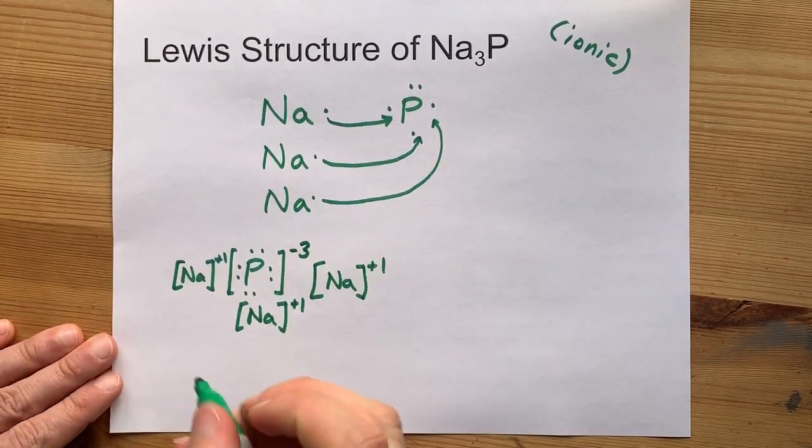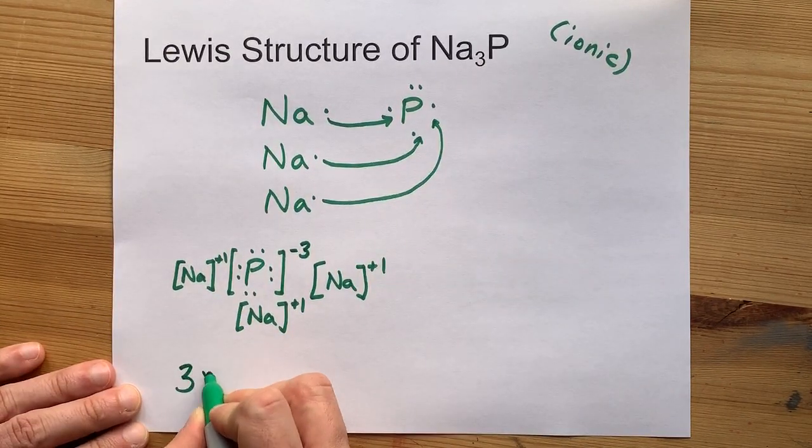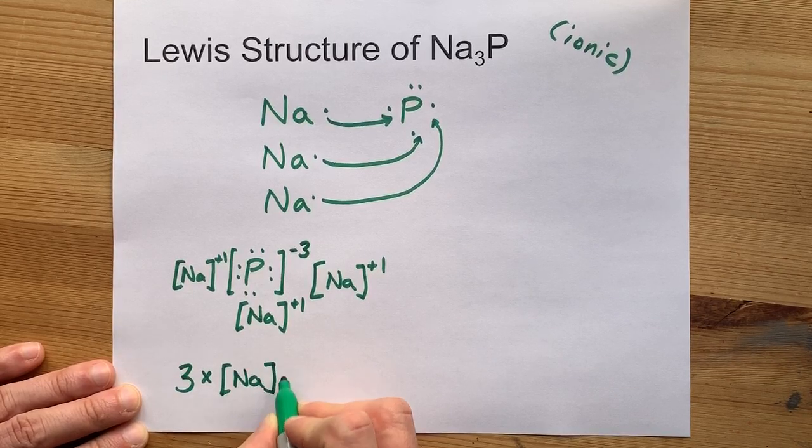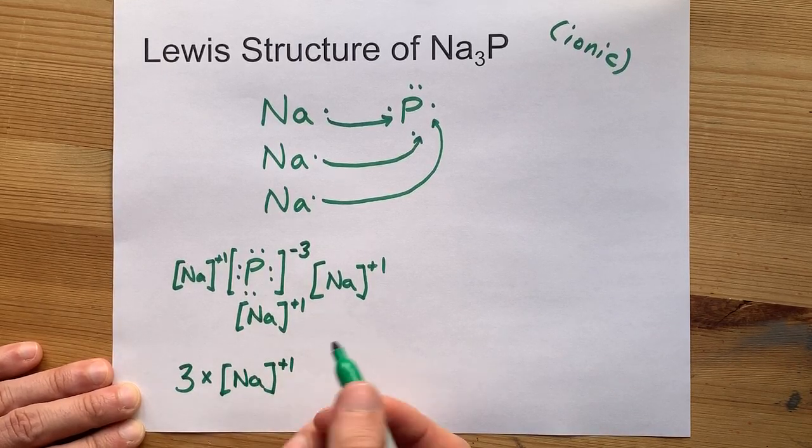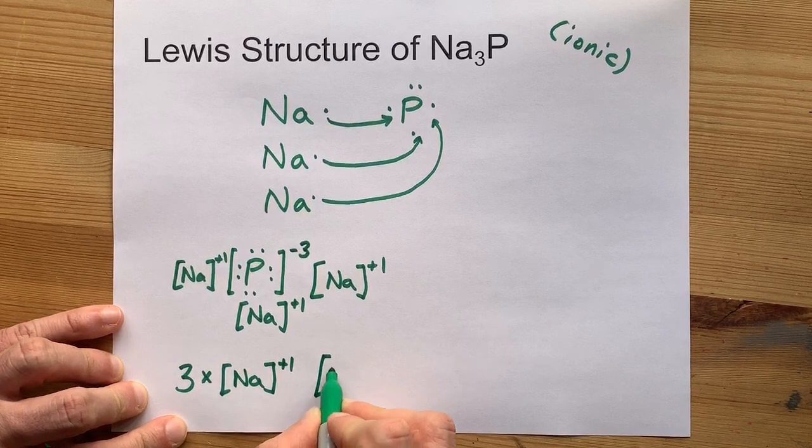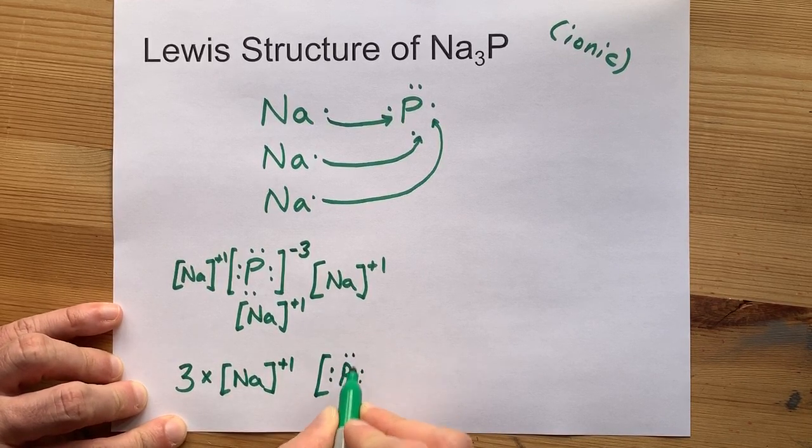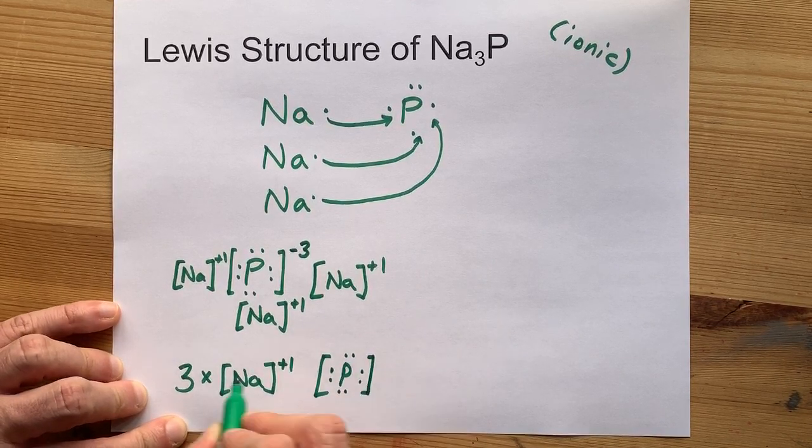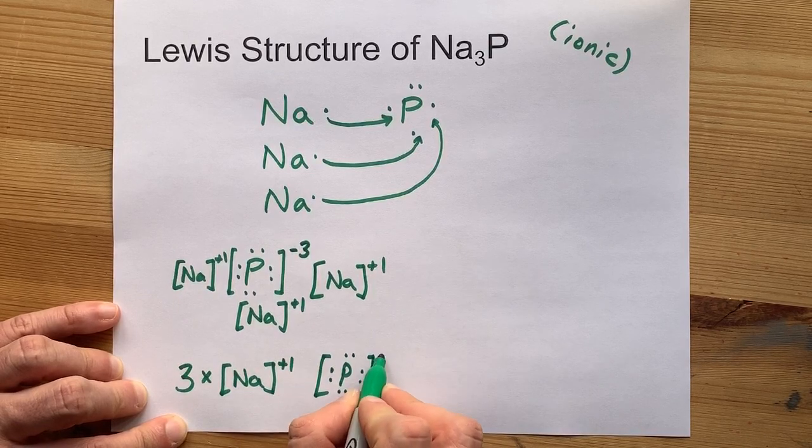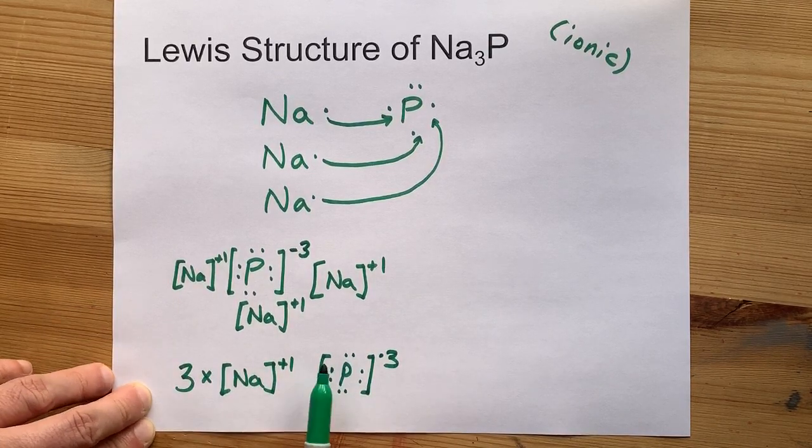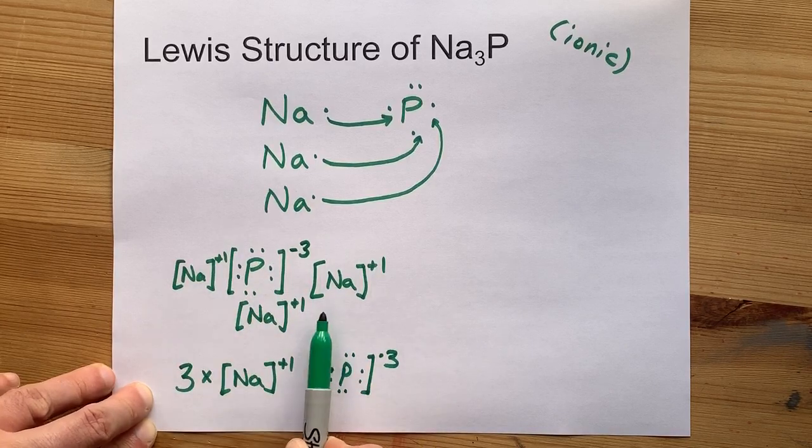You might be able to take a shortcut, writing 3 times that Na with a plus 1 charge. If you don't want to write it out 3 times, you still have to show people the phosphorus, otherwise they'll be confused and think you just have 3 plus 1 Na's. Here we go. This could be your shortcut. I don't know. I prefer this myself.